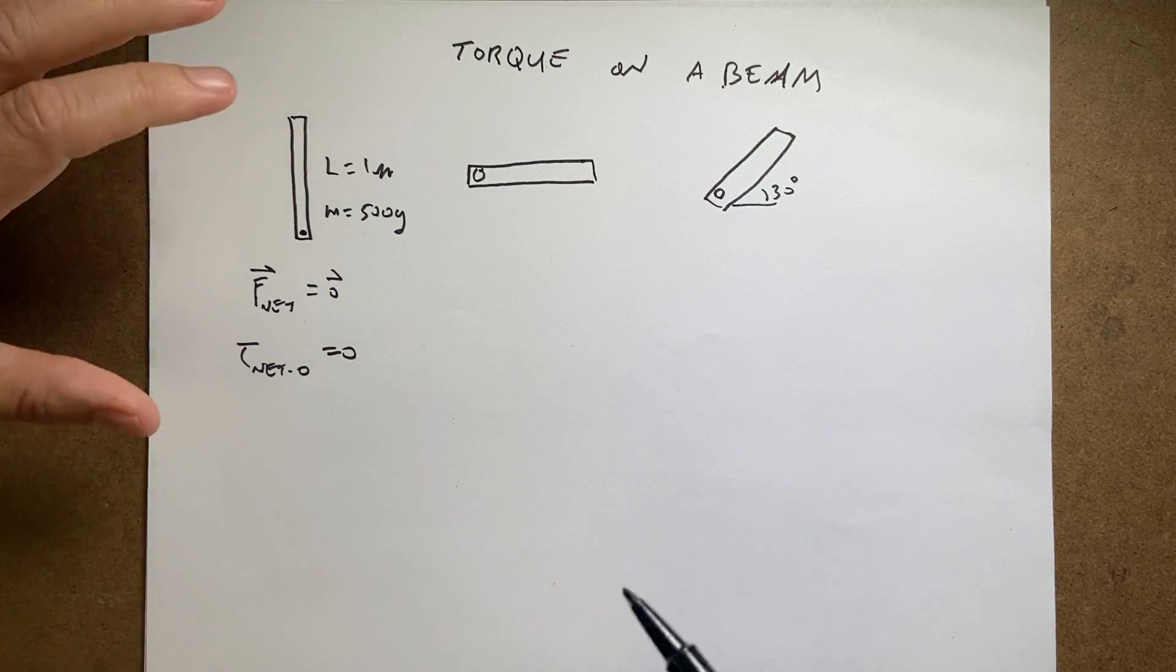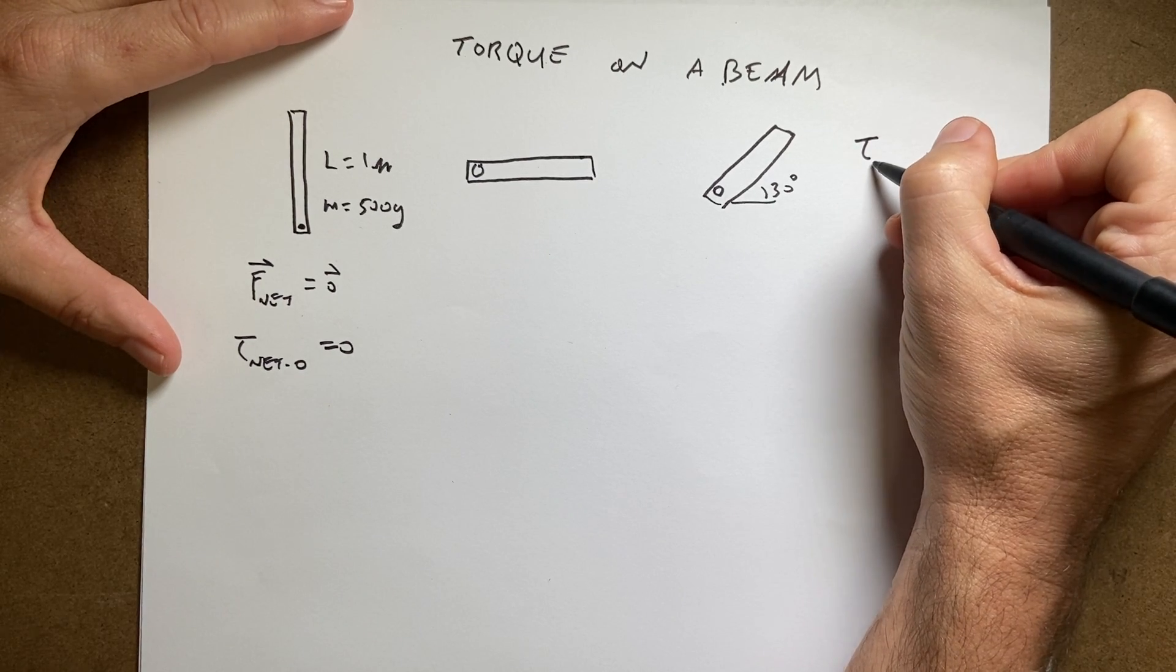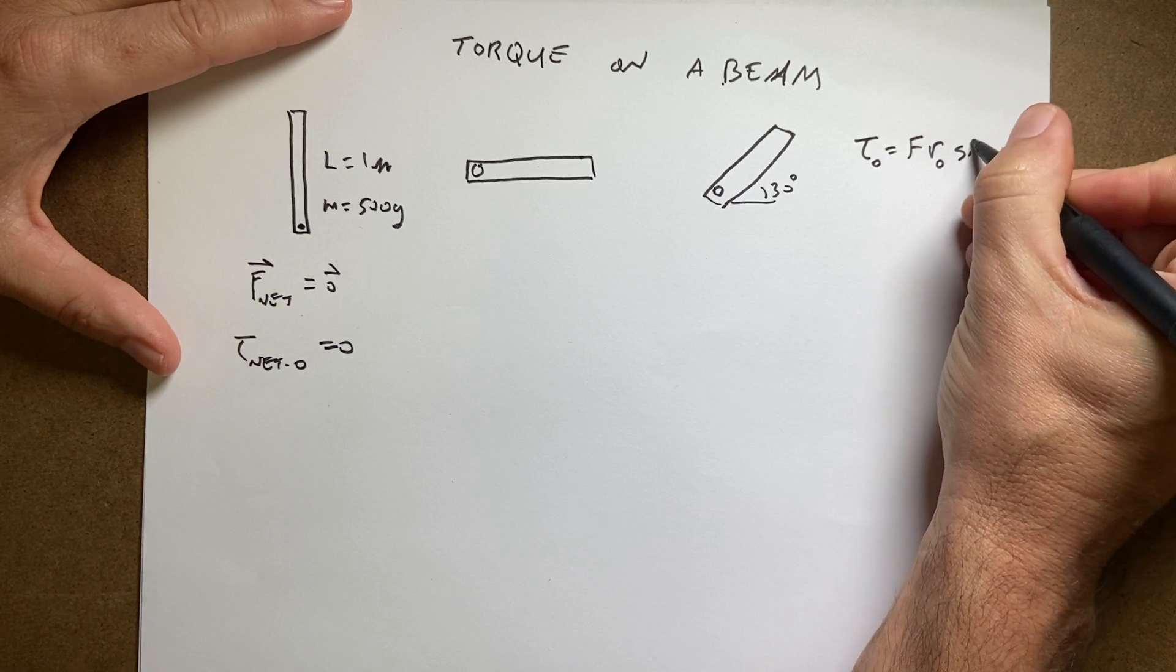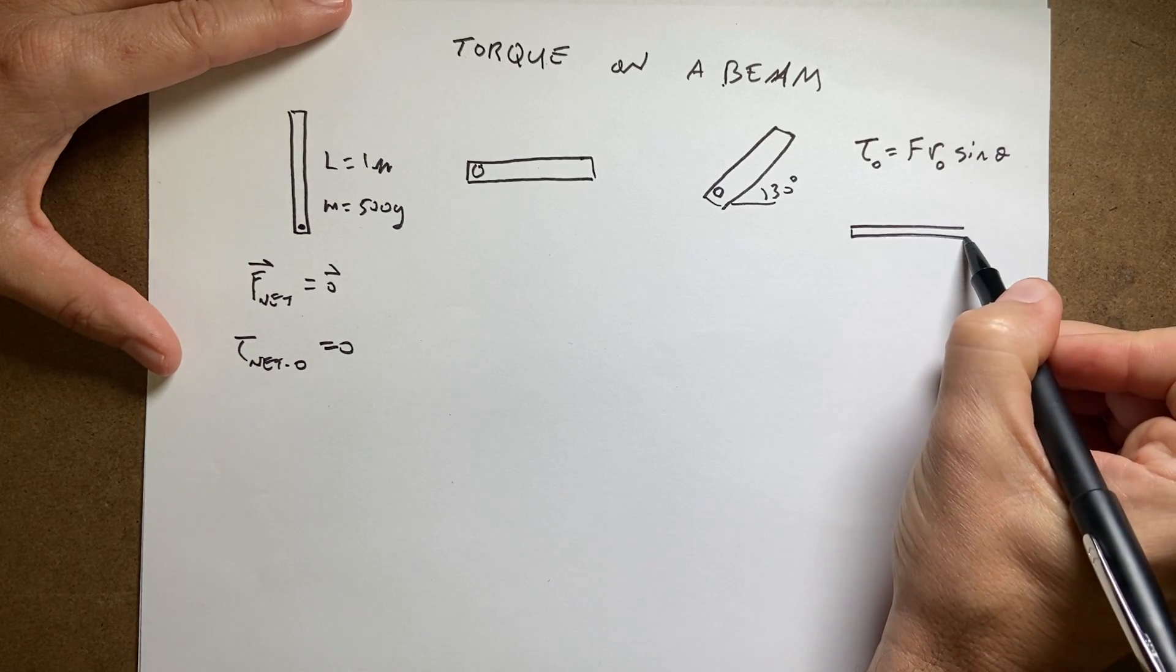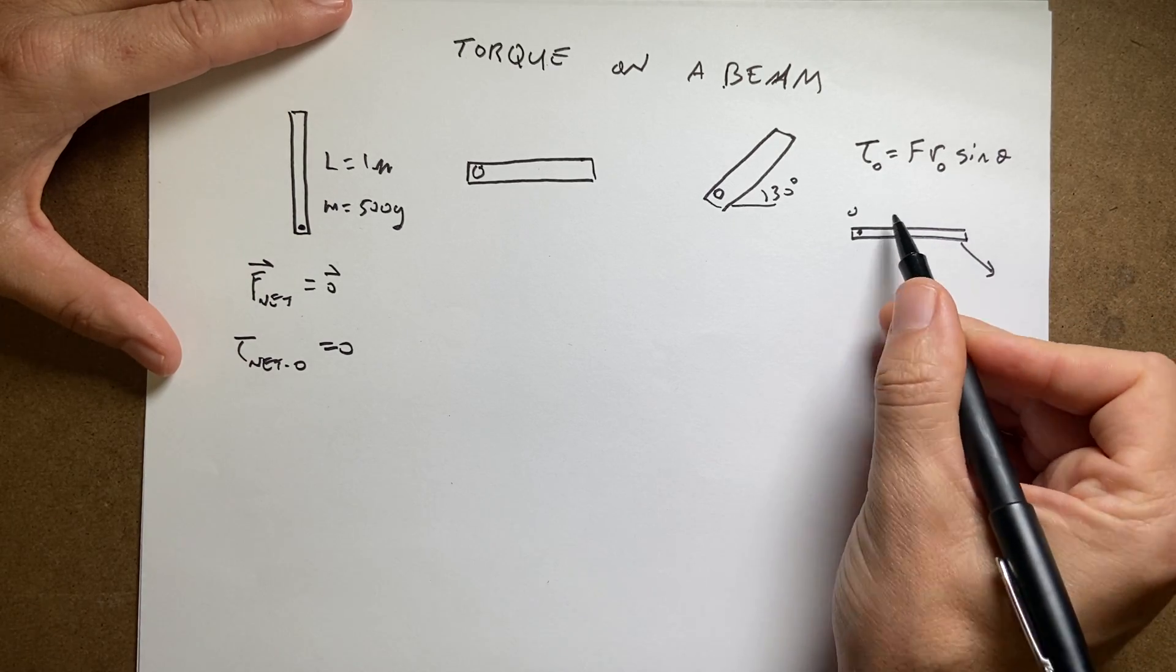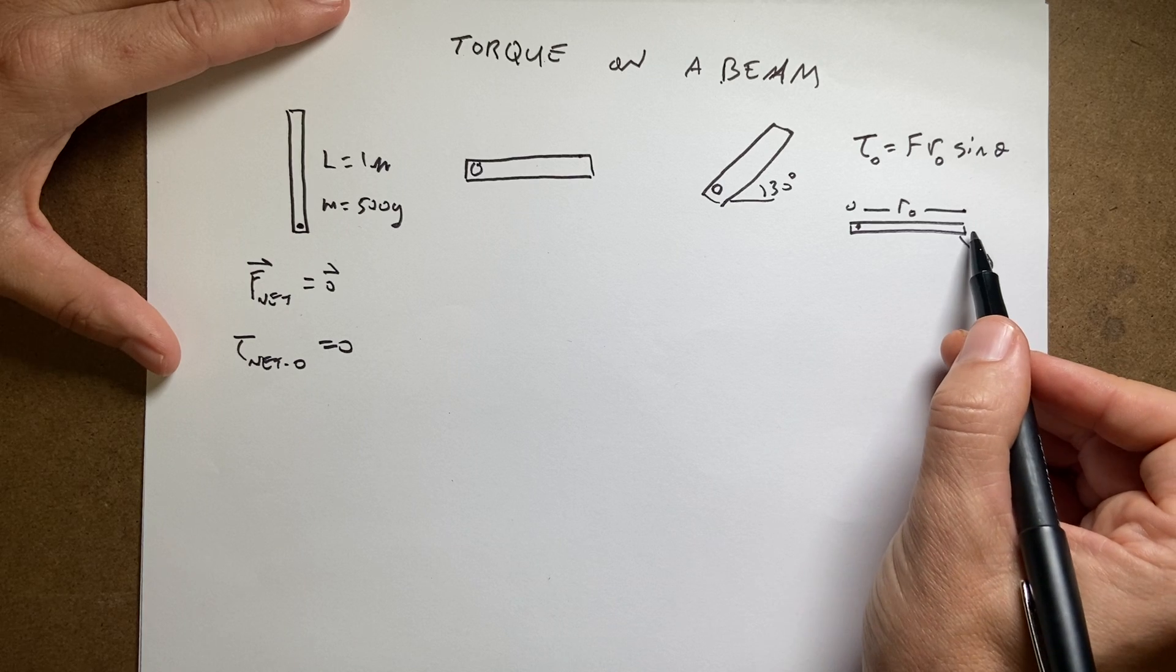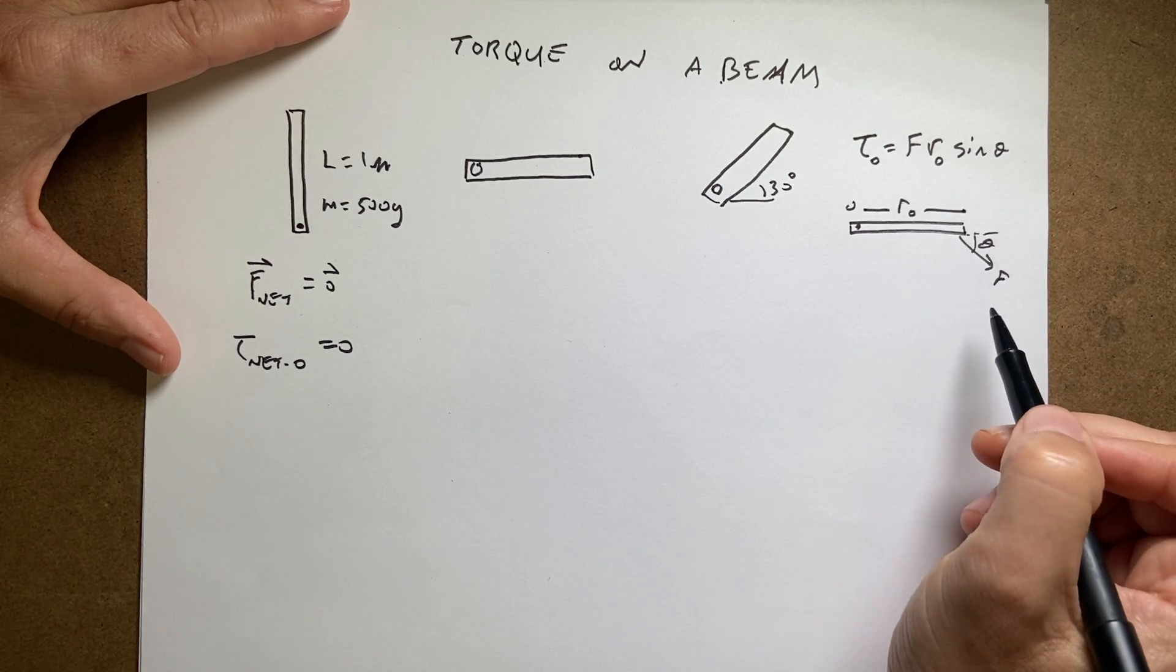In order to do both of those, we need the definition of torque. Let me write the definition of torque over here. This is the algebraic physics definition of torque about some point O: τ = F·r_o·sin(θ). In this case, if I have a beam and a force and a point O, this is r_o, the distance from point O to where the force is applied. And then θ is the angle between F and r, right there.